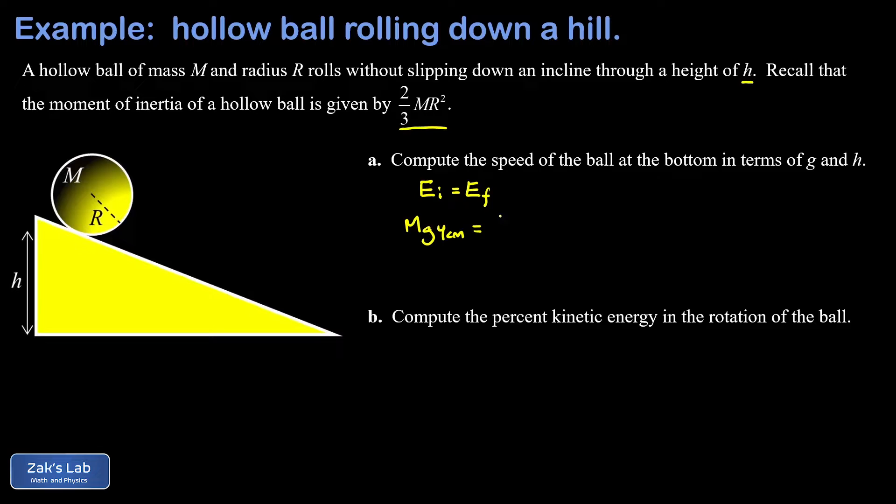That kinetic energy goes into two different places. Part of it is the translational kinetic energy, and that's one-half m times the center of mass velocity squared. And the other part is the rotational kinetic energy, and that's one-half I, the moment of inertia, times omega squared, where omega is the rotational speed.